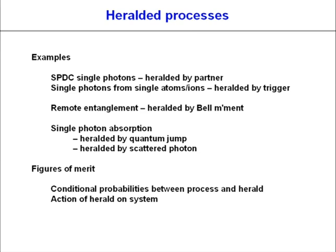Examples of heralded processes include heralded single photons from spontaneous parametric down-conversion sources, where the presence of one photon is heralded by the partner photon. When we emit single photons from a single atom, the trigger of emission acts as a herald. Remote entanglement is heralded by a Bell measurement on photons. For single photon absorption, you can herald success either by a quantum jump — where the atom makes a real state change, becoming bright or dark — or by a scattered photon. In heralding, there are at least two figures of merit: the conditional probability between process and herald, and the action of the herald on the system.